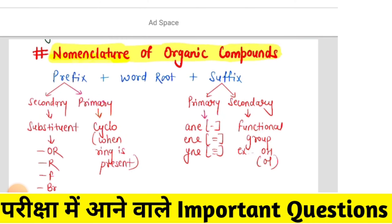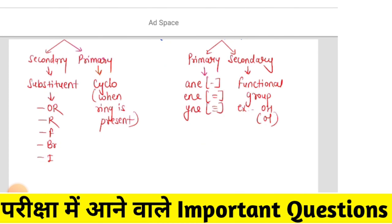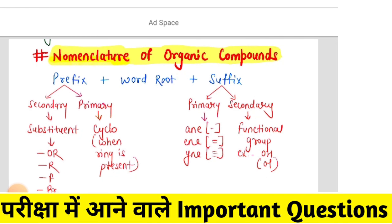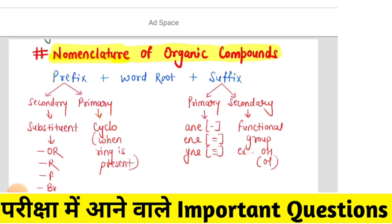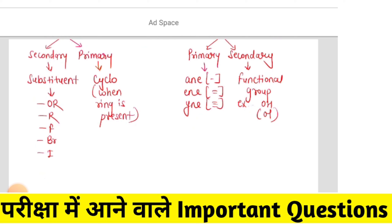Here you will see the nomenclature of organic compounds. Prefix means secondary and primary. Substituents such as O, R, F, Br, I are called substituents. When a ring is present, it comes in primary form. In suffix, there is primary form and secondary form.